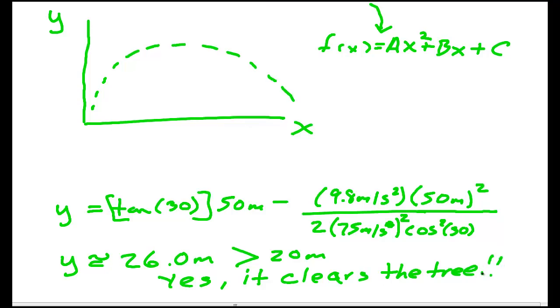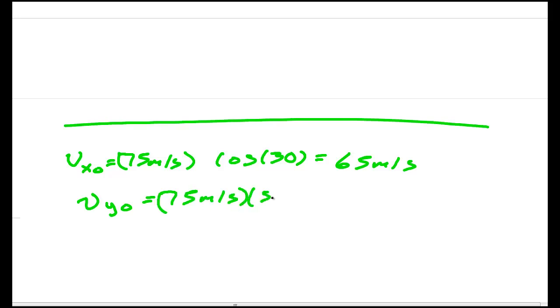Now could I have saved some time and done this problem differently? Well like I said, you could have plugged numbers in from the very beginning. So we could have said that VX0 was 75 meters per second cosine of 30 degrees. We could have punched that in our calculator and had we done that, we'd have got 65 meters per second. VY0, 75 meters per second sine 30, that would have been 37.5 meters per second. We could have plugged in the time. The time would have been 50 meters over 65 meters per second.